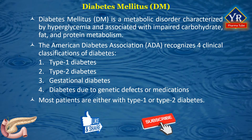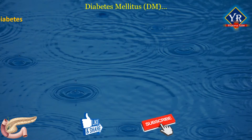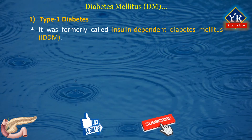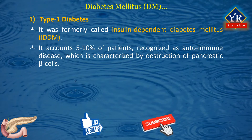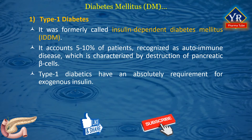Most patients can be classified clinically as having either type 1 or type 2 diabetes. Type 1 diabetes, formerly called insulin-dependent diabetes mellitus, accounts for 5 to 10 percent of patients with diabetes and is largely recognized as an autoimmune disease characterized by destruction of pancreatic beta cells. Because the pancreas can no longer produce insulin, type 1 diabetics have an absolute requirement for exogenous insulin.